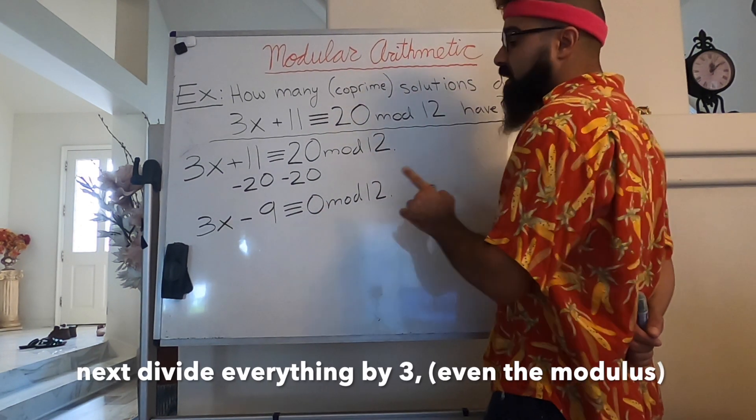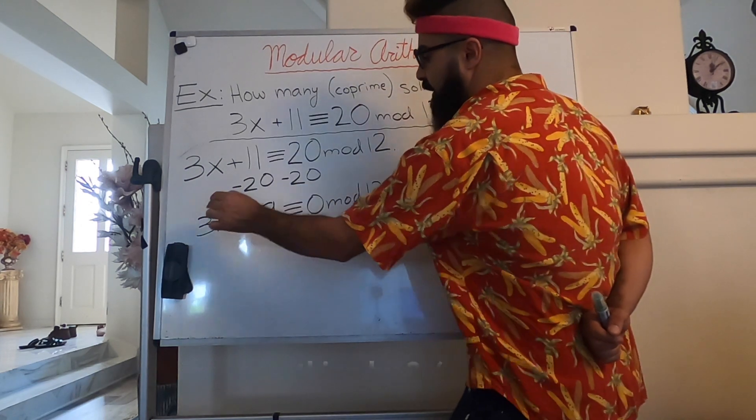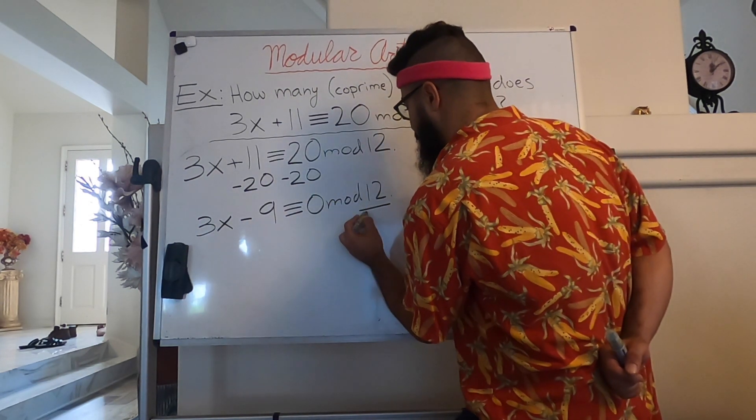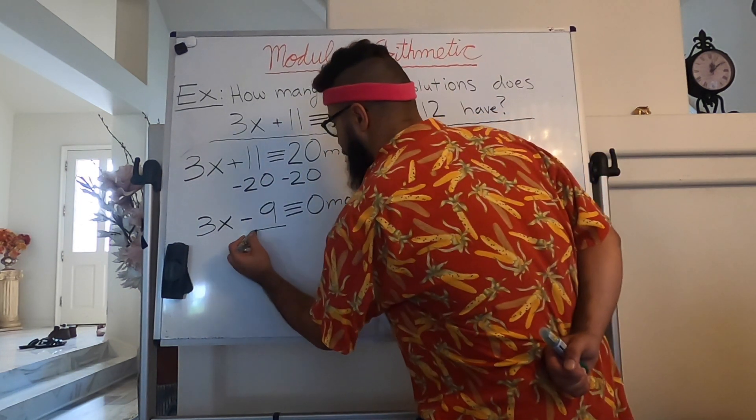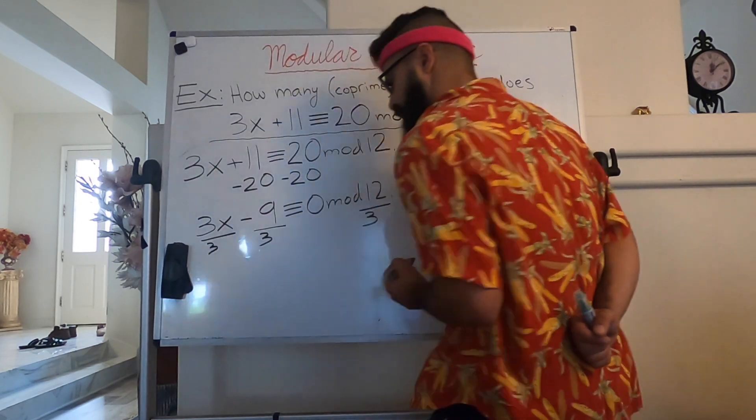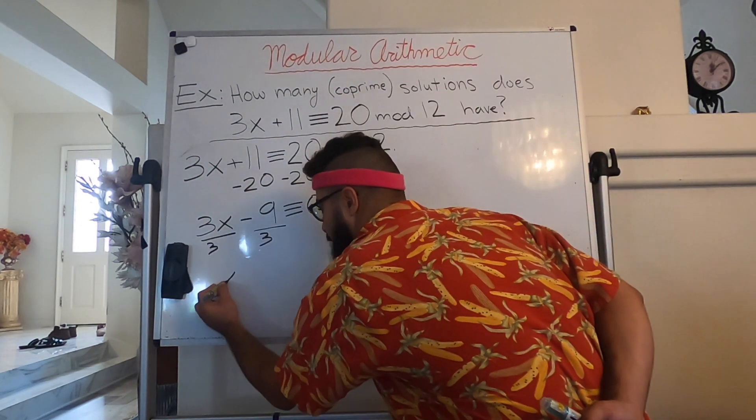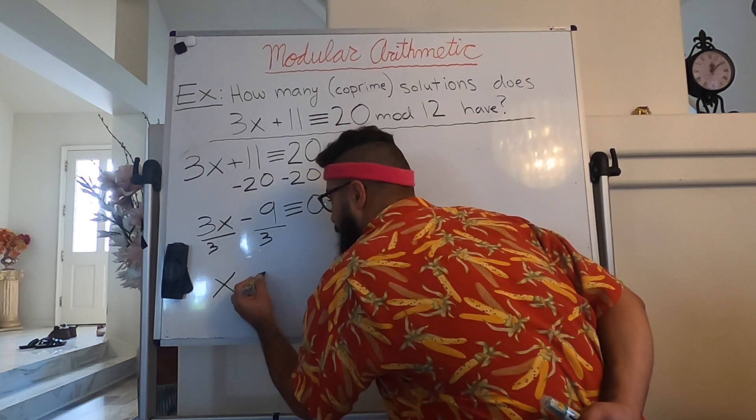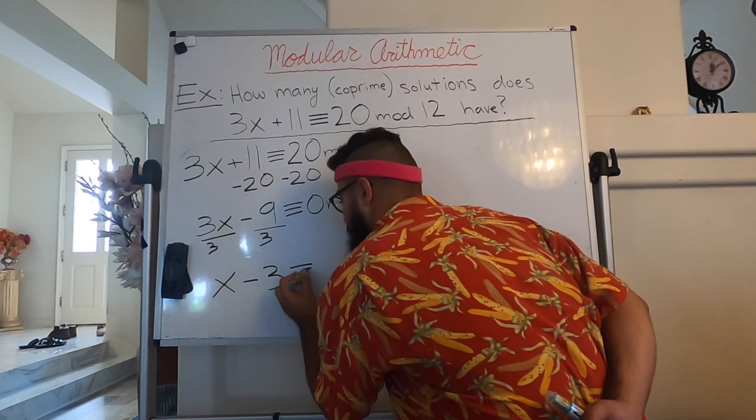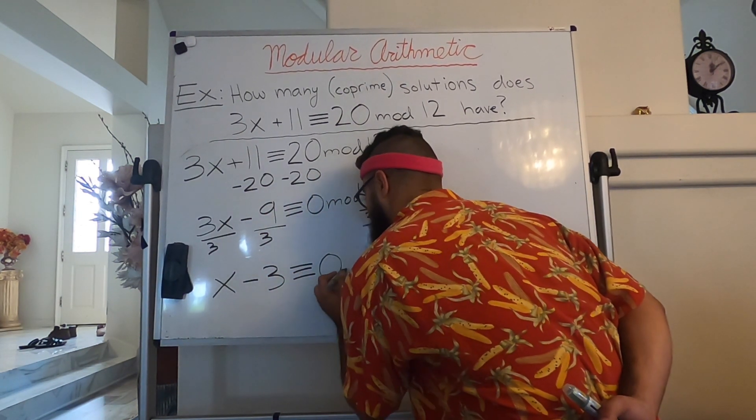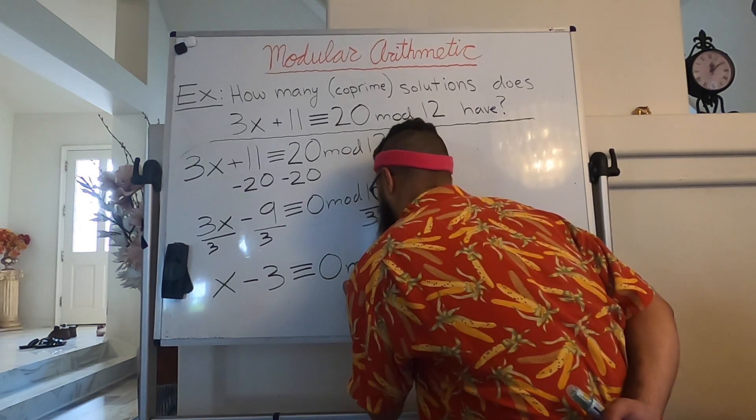Lastly, we can divide everything here by 3. The modulus gets divided by 3, this gets divided by 3, and this gets divided by 3. And we have x minus 3 is congruent to 0, you got it, mod 4.